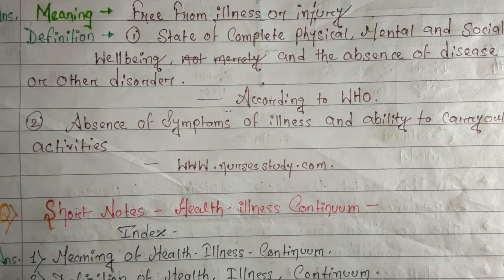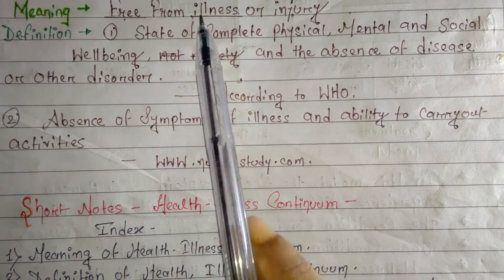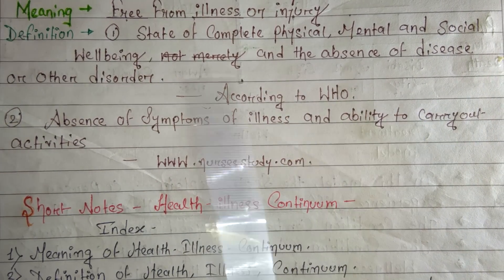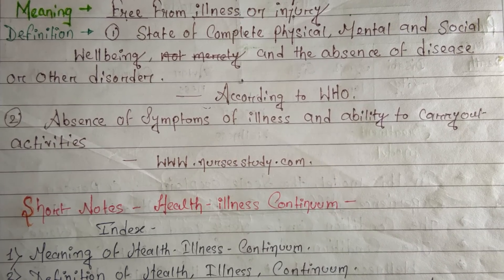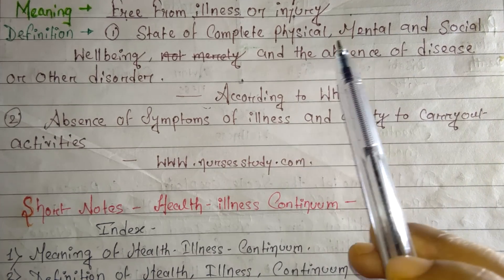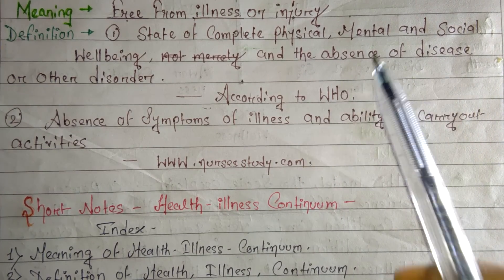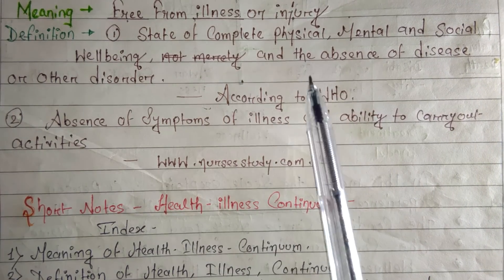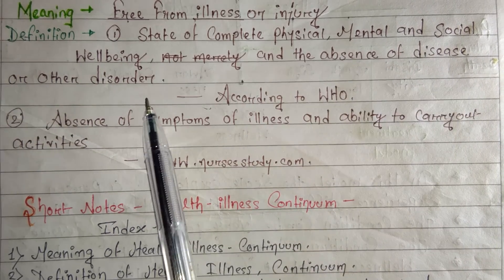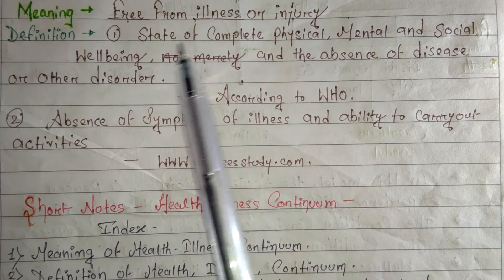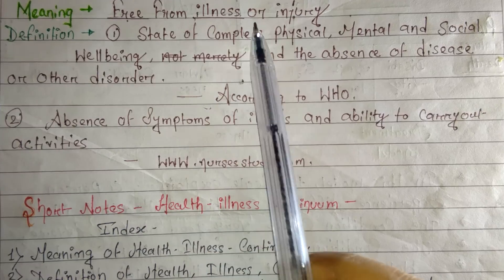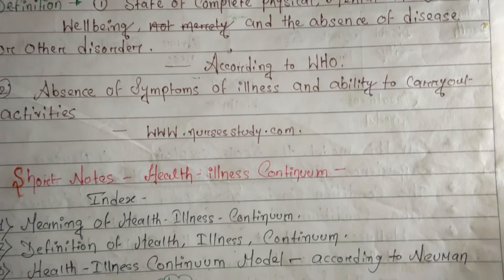Now let's start with the definition. It is a state of complete physical, mental and social well-being and the absence of disease or other disorder, according to WHO. So 'state' means it is a condition — a condition of complete physical (meaning in our body), mentally (meaning emotional feelings and everything), and social (meaning in our society) well-being, and the absence of disease or any other disorder. That condition is called health, according to the World Health Organization.